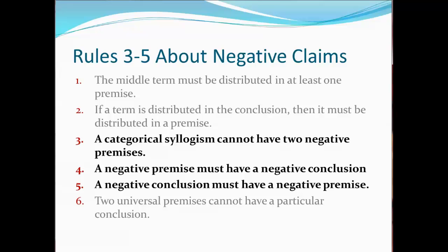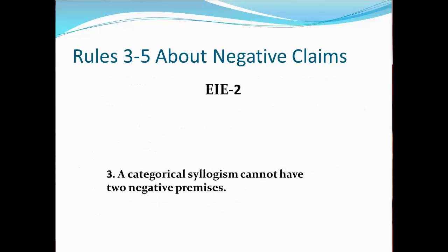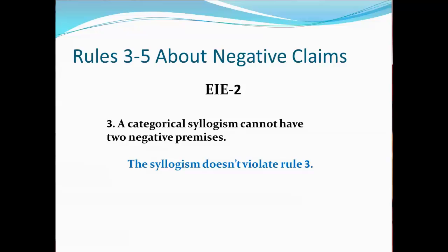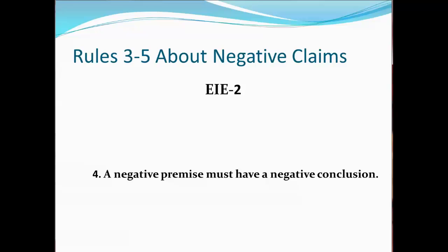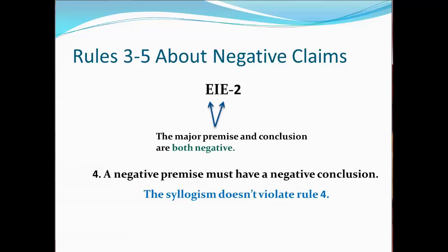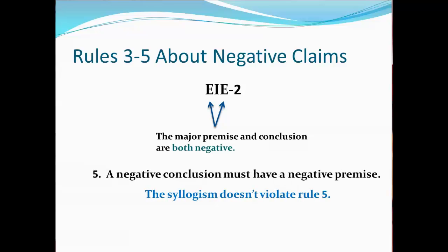Let's look at Rules 3 through 5 applied to an EIE-2 syllogism. These rules are about the relationship between negative claims and validity. Rule 3 says a syllogism cannot have two negative premises. The major premise is an E claim, which is negative, but the minor premise is an I claim, which is affirmative — so the syllogism doesn't violate Rule 3. Rule 4 says a negative premise must have a negative conclusion. The major premise is an E claim (negative), and the conclusion is an E claim (also negative), so Rule 4 is satisfied. Rule 5 says a negative conclusion must have a negative premise. This syllogism has a negative conclusion and the major premise is also negative, so it doesn't violate Rule 5.